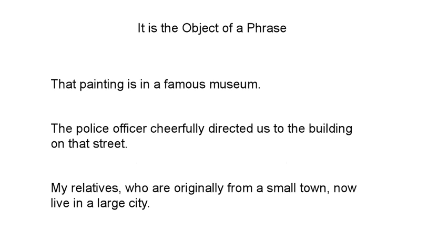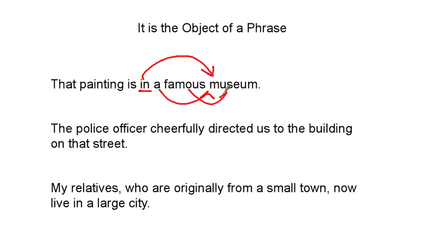Strategy four: it is the object of a phrase. A phrase is any group of words that either contains a noun or not. If it doesn't contain a noun, it's usually a verb phrase; if it contains a noun, the noun is the object of that phrase. Noun phrases are usually prepositional phrases, where the preposition sets off the phrase. Let's look for prepositions: 'That painting is in a famous museum.' 'In' — in what? 'In a museum.' If you need more support, 'a' and 'famous' are both modifying 'museum.'